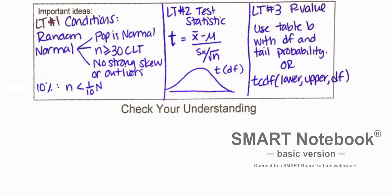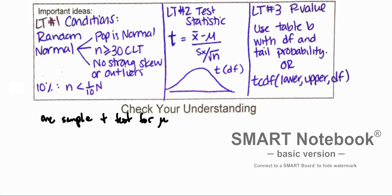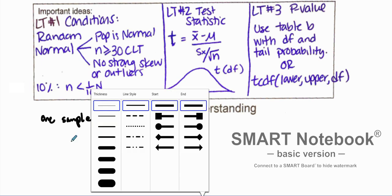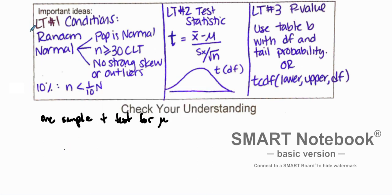Welcome back. We're going to take some notes and go through a problem dealing with a one-sample t-test for our mean. When we do a one-sample t-test, just like when we did a t-interval, you want to state the parameter along with your level of significance, and then state what your test is — the one-sample t-test.